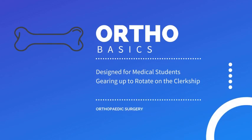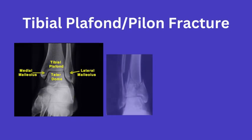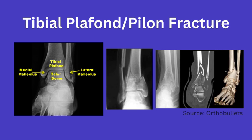Today we will go over the tibial plafon fracture, sometimes just referred to as a pylon fracture. A pylon fracture is a fracture to the distal end of the tibia, commonly associated with comminution, intra-articular extension, and significant soft tissue injuries, since they are most commonly due to a high energy injury mechanism involving axial loading.